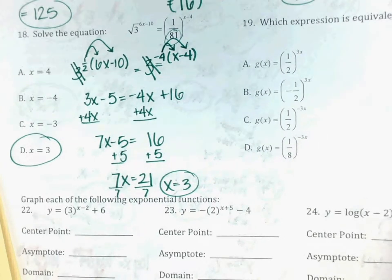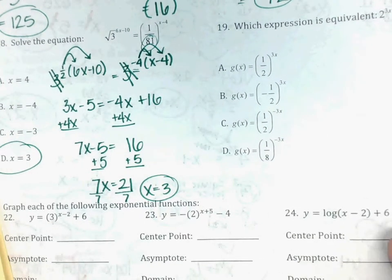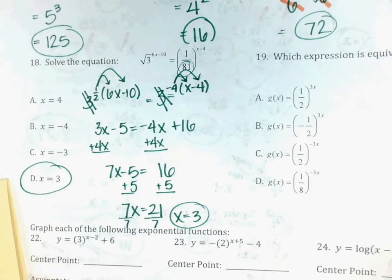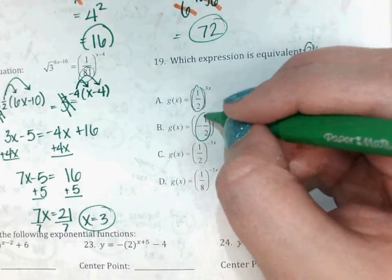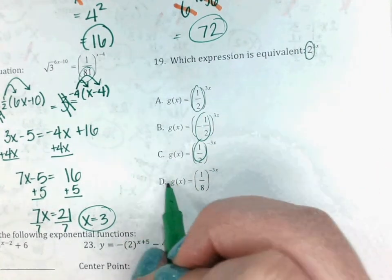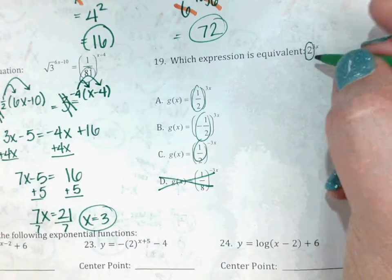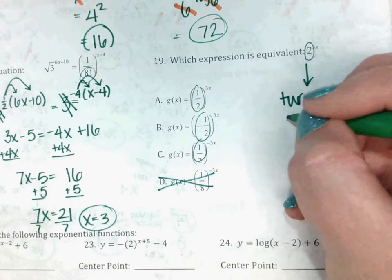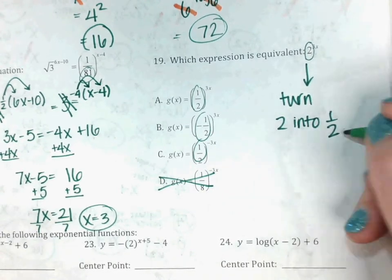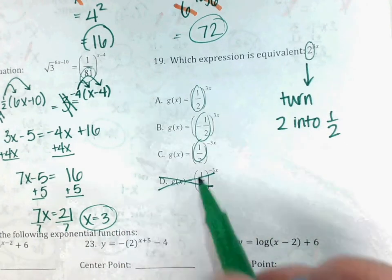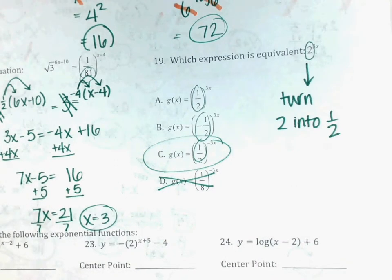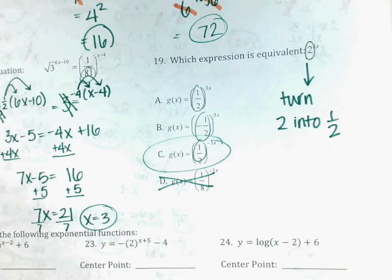Last one like that — number 19. What do I do if I want to change my base of 2 into a base of a half? You put a negative up top on the exponent. If it was a 5 on top and I wanted to turn it into a fifth, I put a negative on it. If it was a 7 and I want to turn it into a seventh, put a negative up top.